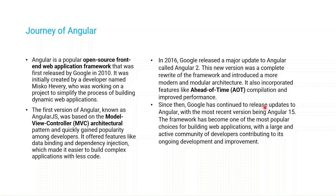Since then, Google has continued to release updates to Angular, with the most recent stable release being Angular 15 as of 2023. They introduce a new release every three months — around four releases per year — so this version number changes quickly. The framework has become one of the most popular choices for building web applications, with a large and active community of developers contributing to its ongoing development and improvement.